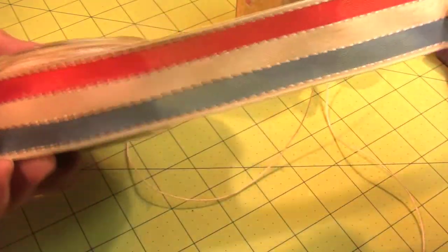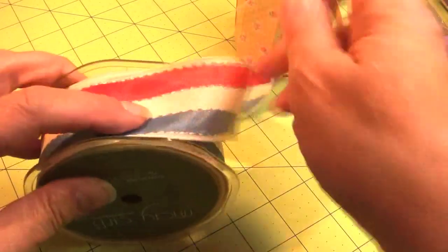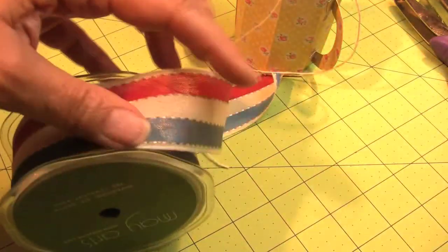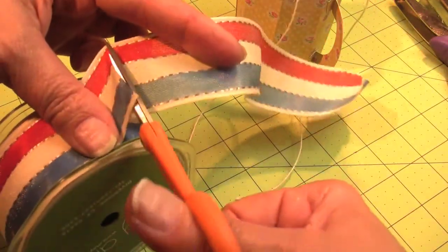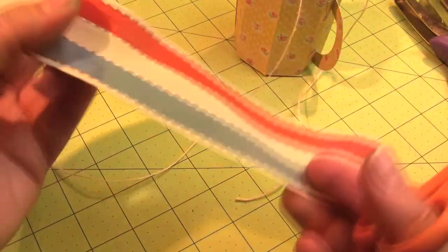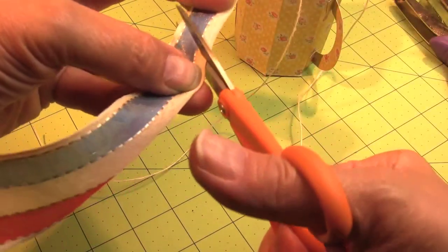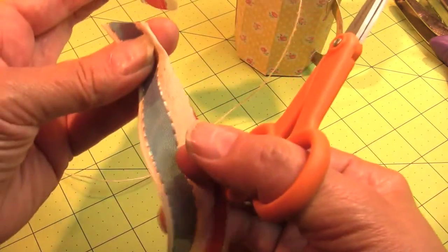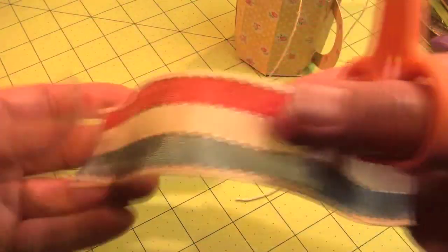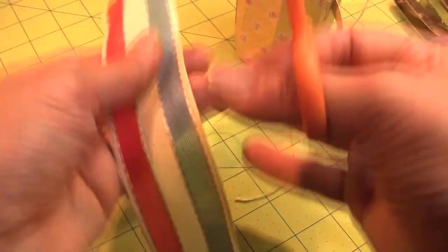Next is this beautiful striped ribbon. I love this stuff. And it's not red, white, and blue, it's red sort of canvas colored and blue. It's not even cream or kraft, it's more of a canvassy color. And I'm just going to fold it in half and trim both ends so that both of them have a double point on them.